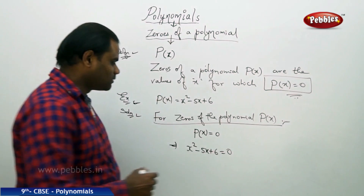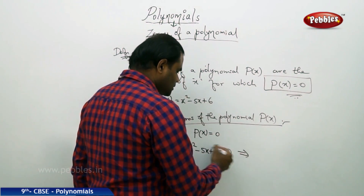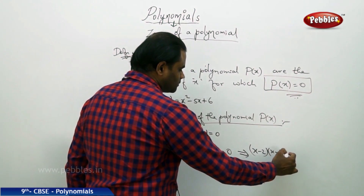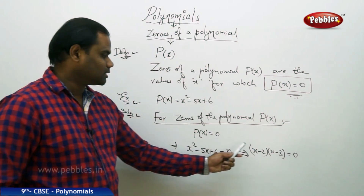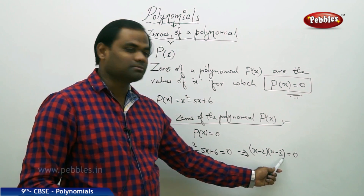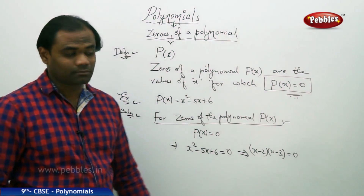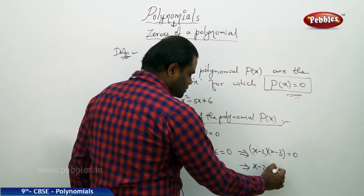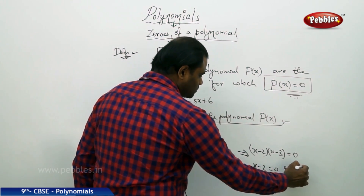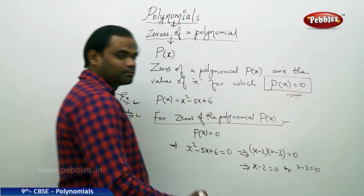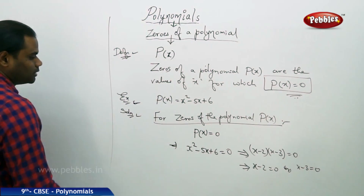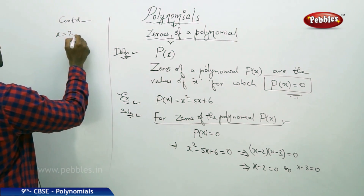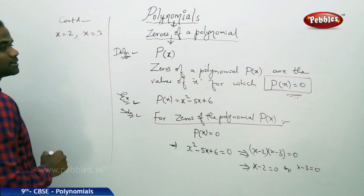On further simplification, we factorize using quadratic factorization: x squared minus 5x plus 6 factors as x minus 2 times x minus 3, which equals zero. Since the product of two factors is zero, either x minus 2 equals zero or x minus 3 equals zero, giving x equals 2 and x equals 3.